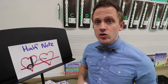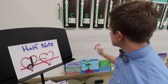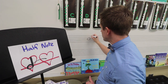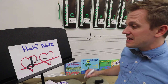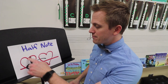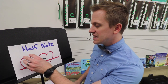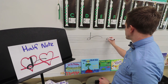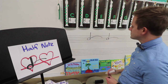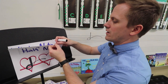Next, we have a half note. A half note looks very similar to a quarter note, but the difference is it's empty on the inside. Instead of filling in your note head, you're just going to do a circle with a stem, and that lasts for two beats — half a measure. Go ahead and draw some half notes.